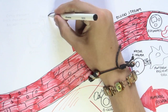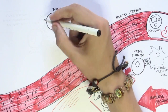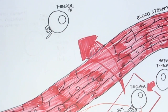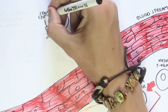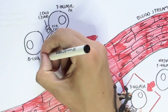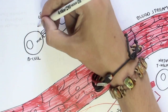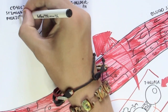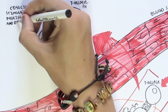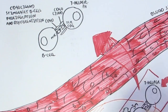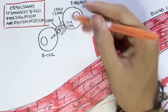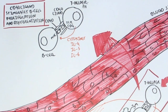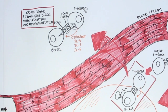The T helper cell has a CD4 co-receptor, a TCR (T cell receptor), and also a CD40 ligand receptor. The B cell has an MHC class II which presents the antigen to the T helper cell, and also a CD40 receptor. The CD40 ligand of the T helper cell is important because it stimulates the B cell's proliferation and differentiation, as well as some cytokines secreted by the T helper cell such as interleukin-4, interleukin-5, and interleukin-6.